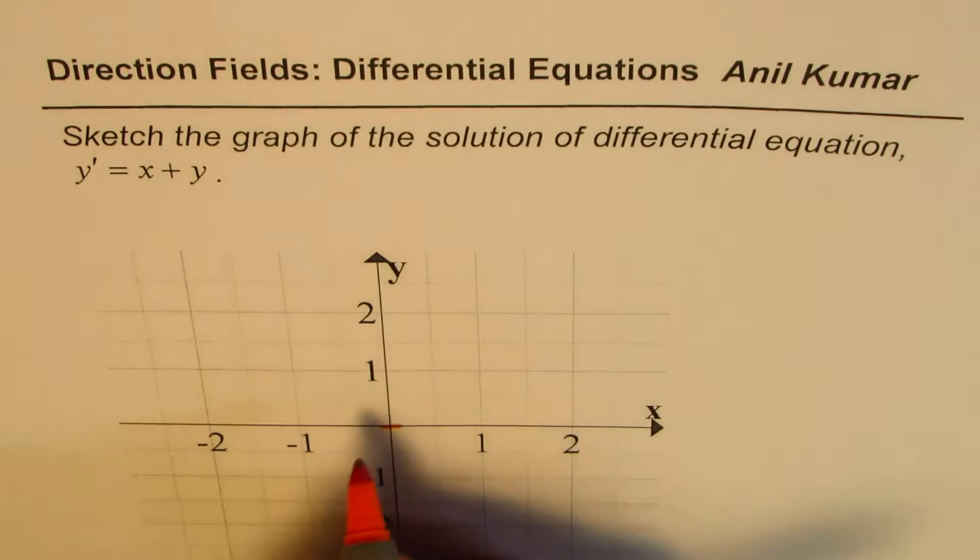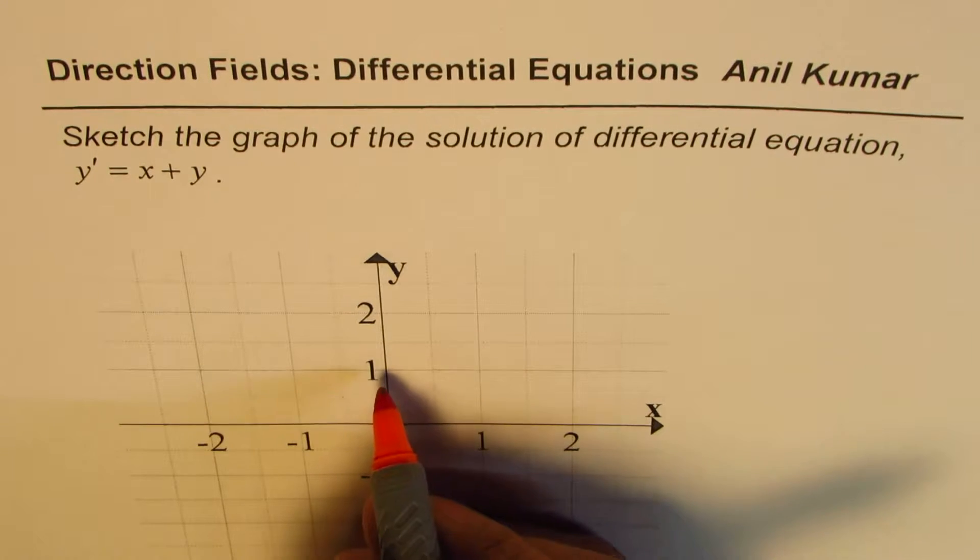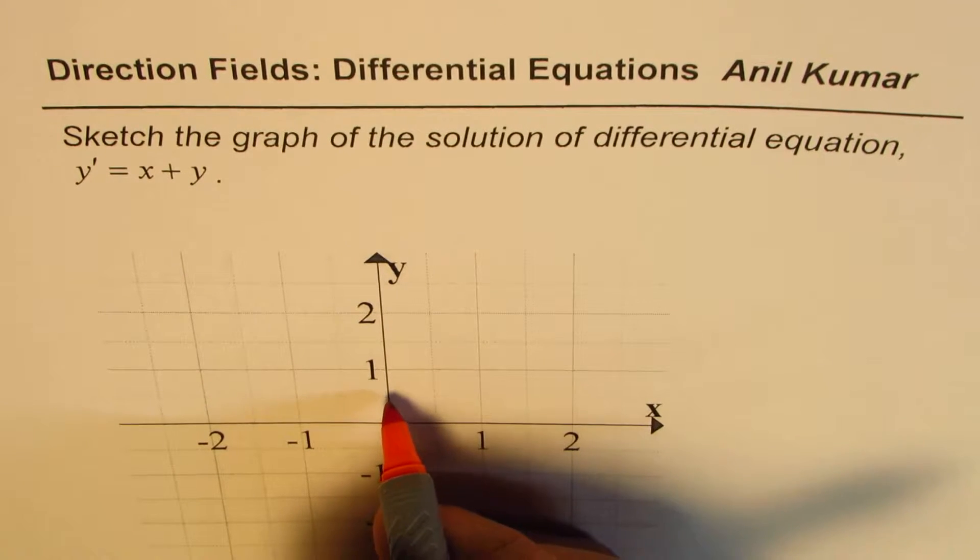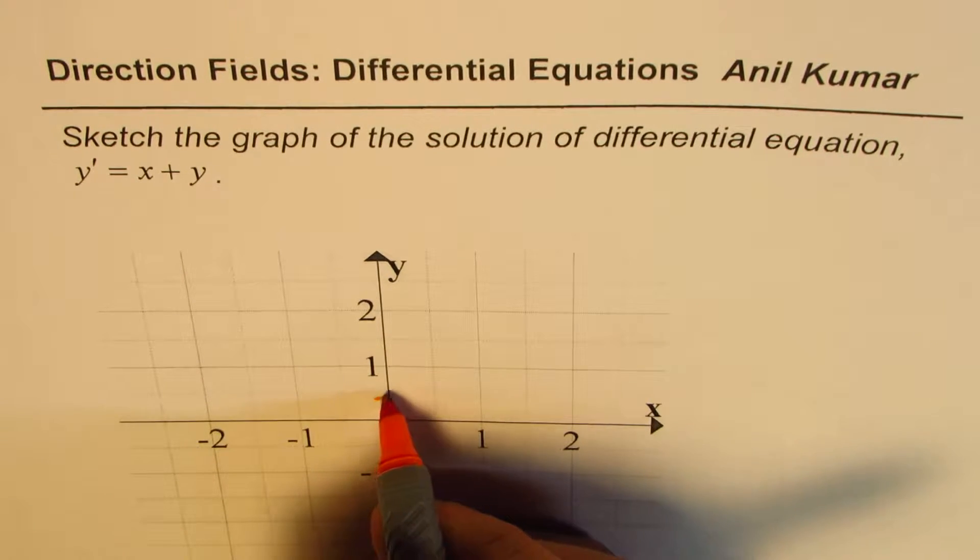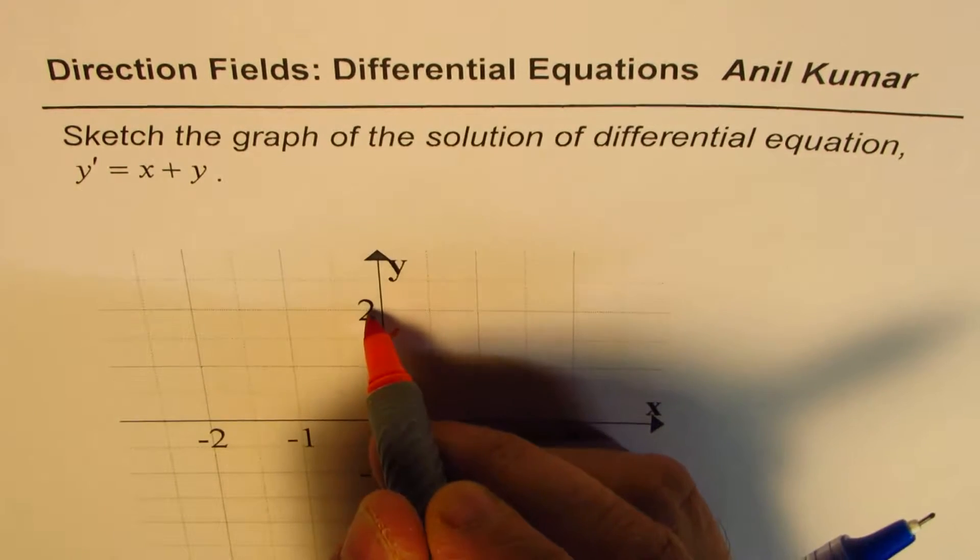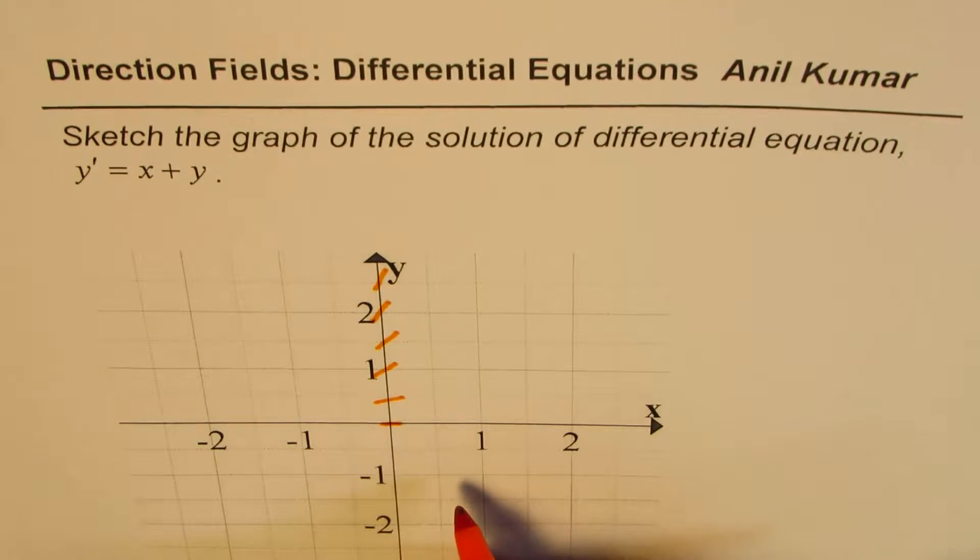Now, if I increase the value of y and keep the x value as 0, then we see that the slope as we move up will increase. So if y is 0.5, the slope will be like 0.5. If y is 1, slope will be 1, then it will be 1.5, 2 will be higher, kind of like this. Do you see that? So if I draw these dash lines...